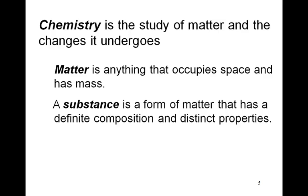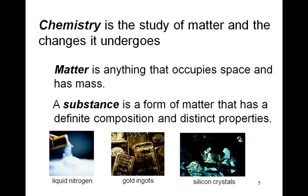A substance is pure. We have gold, silicon, nitrogen. A mixture is something that is not pure. It is a combination of two or more pure substances. Each of those substances retains their distinct identities, their distinct properties, but combined they are a mixture.